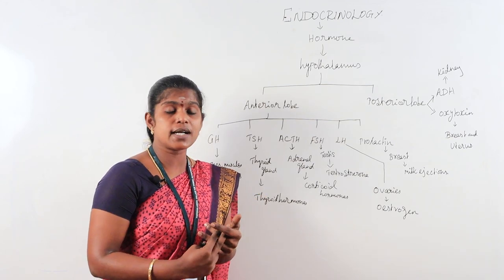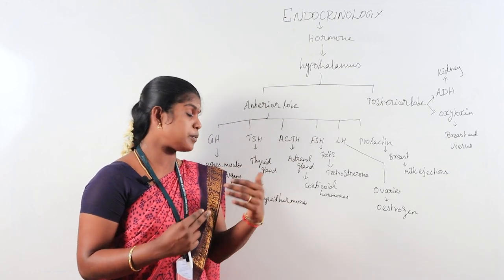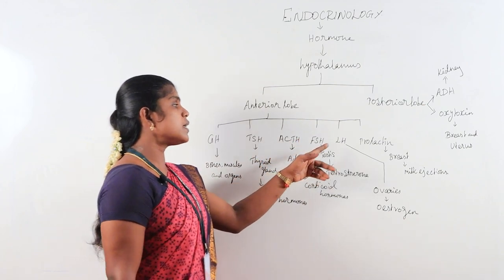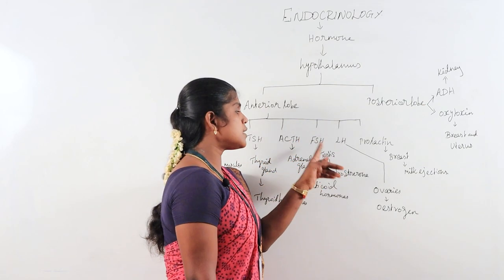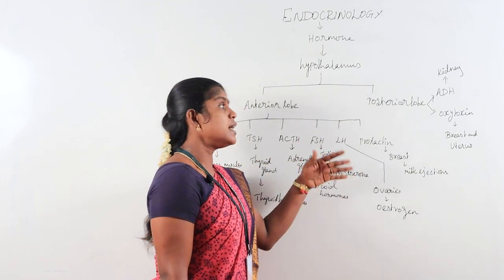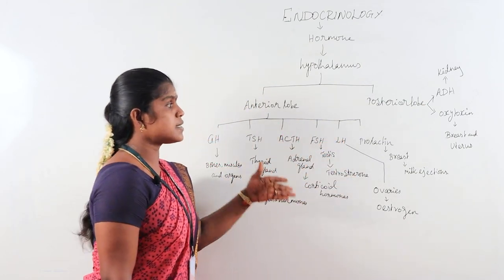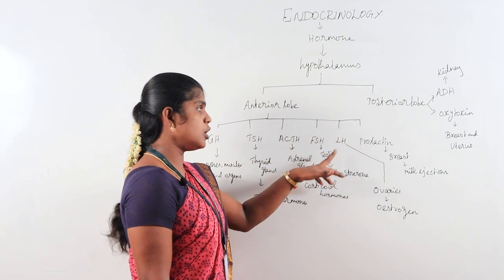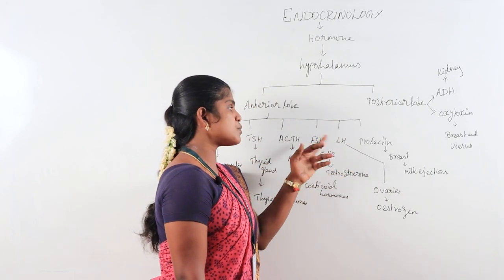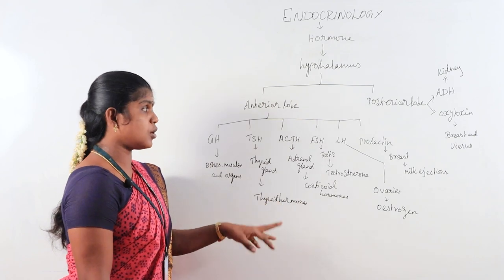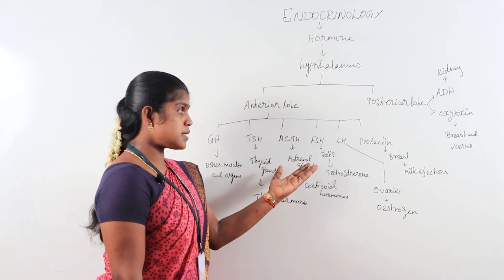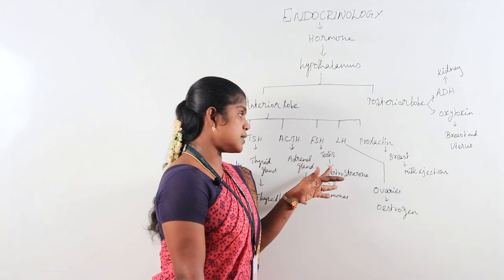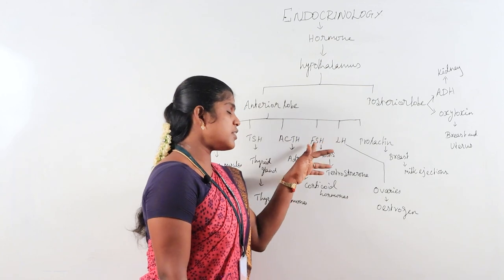Mineralocorticoids act as cofactors in metabolism. FSH acts on the testis through Leydig cells. FSH also acts on the uterus and Leydig cells.